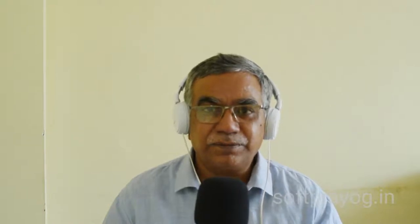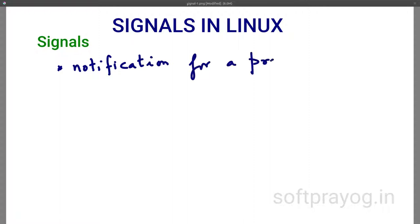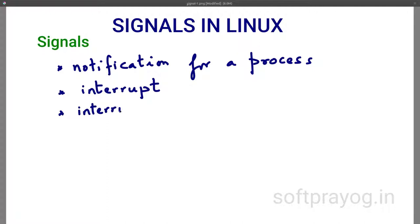So what is a signal? A signal is a notification. It is similar to the notifications we get on our smartphones. The difference is that a notification on a smartphone is for a human being whereas a signal is for a process. Another way to look at a signal is that a signal is like an interrupt — a software interrupt generated by the kernel in response to some event that requires immediate attention.